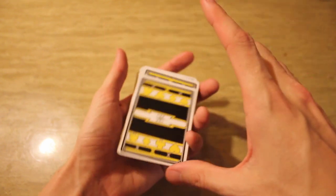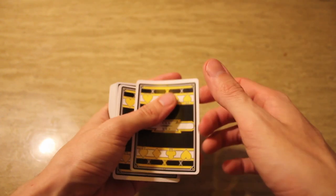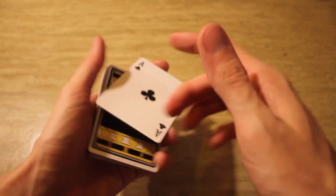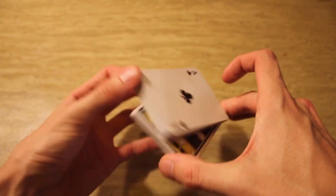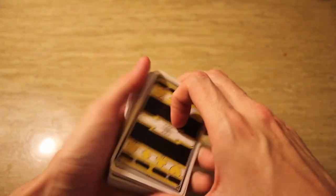Once I catch it, I can place this packet on top of it. So, this is another one where a spectator can put their card on top of the deck, and you can swivel it over and put it into the middle.